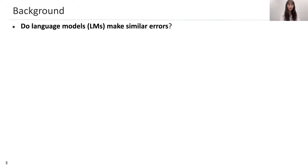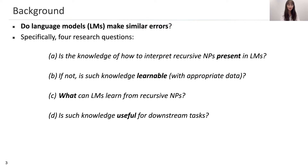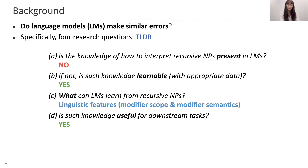In this work, we wonder: do language models make similar errors? Specifically, we want to answer four research questions. A: Is the knowledge of how to interpret recursive NPs present in language models? B: If not, is this learnable? C: What can language models learn from recursive NPs? And D: Is the knowledge useful for downstream tasks? As a spoiler, our short answers are: no, yes, linguistic features, and yes.